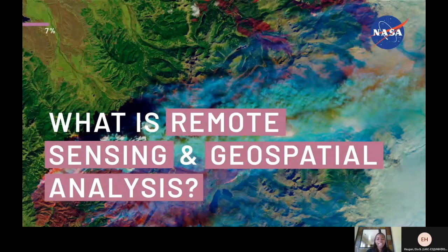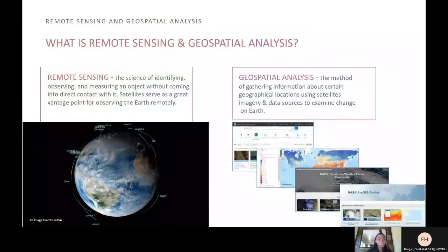What is remote sensing and geospatial analysis? Remote sensing is the science of identifying, observing and measuring an object without coming into direct contact with it. Satellites serve as a great vantage point for observing the Earth remotely. Geospatial analysis is the method of gathering information about certain geographical locations using satellite imagery and data sources to examine change on Earth.